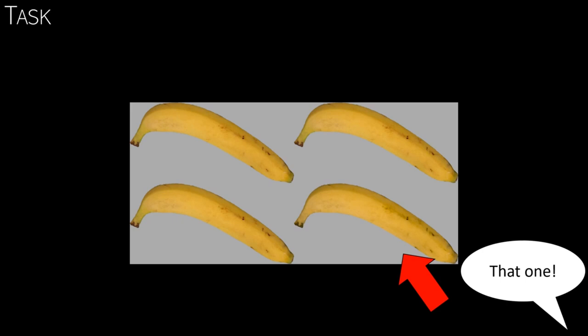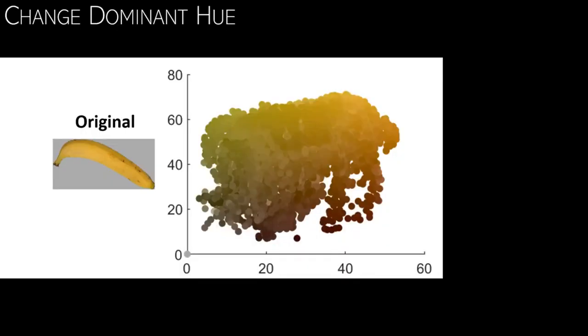But to assess the difficulty of this task, we had a comparison condition. In that comparison condition, we did not change the shape of the distribution, but we rotated it.